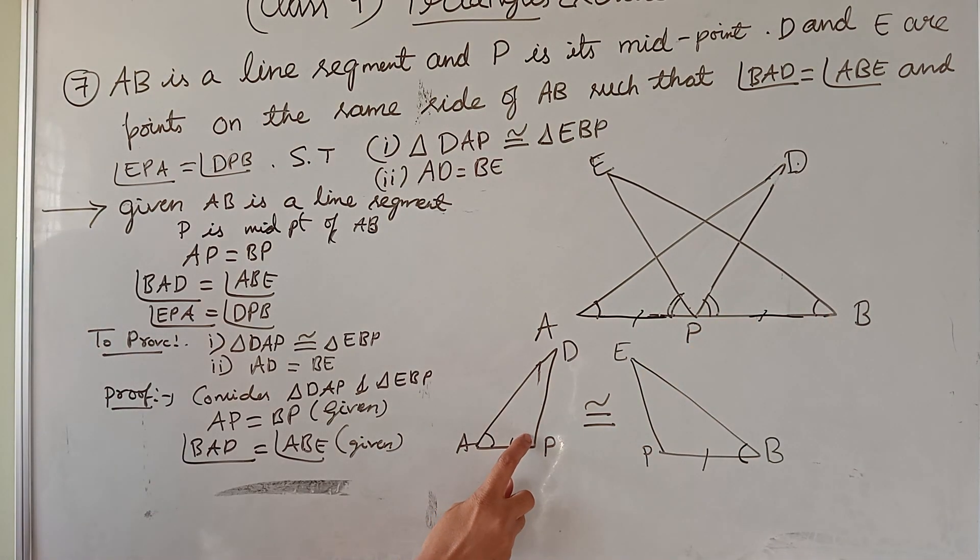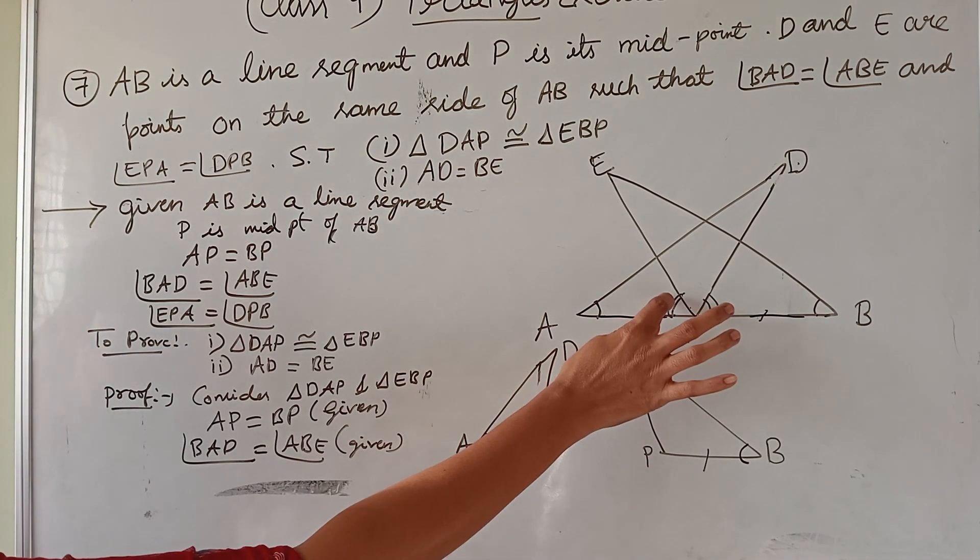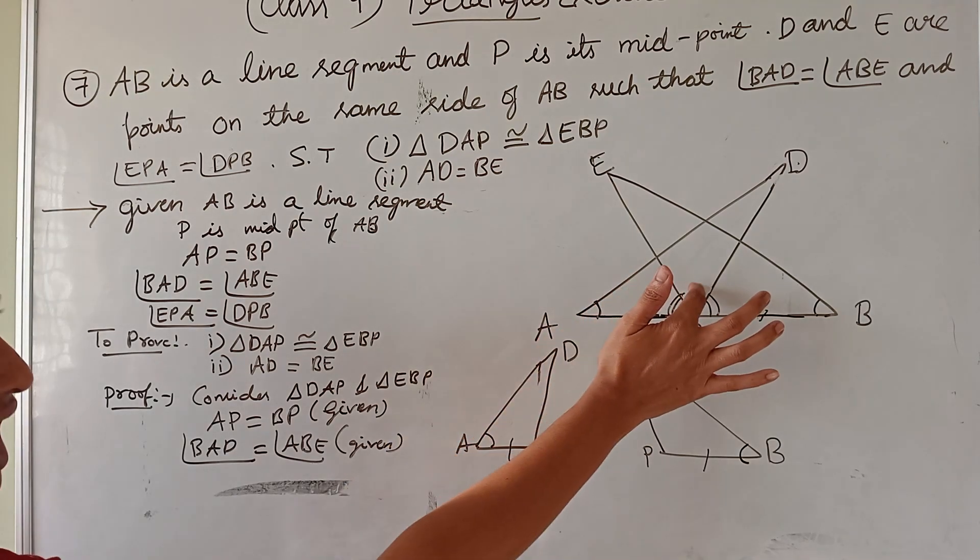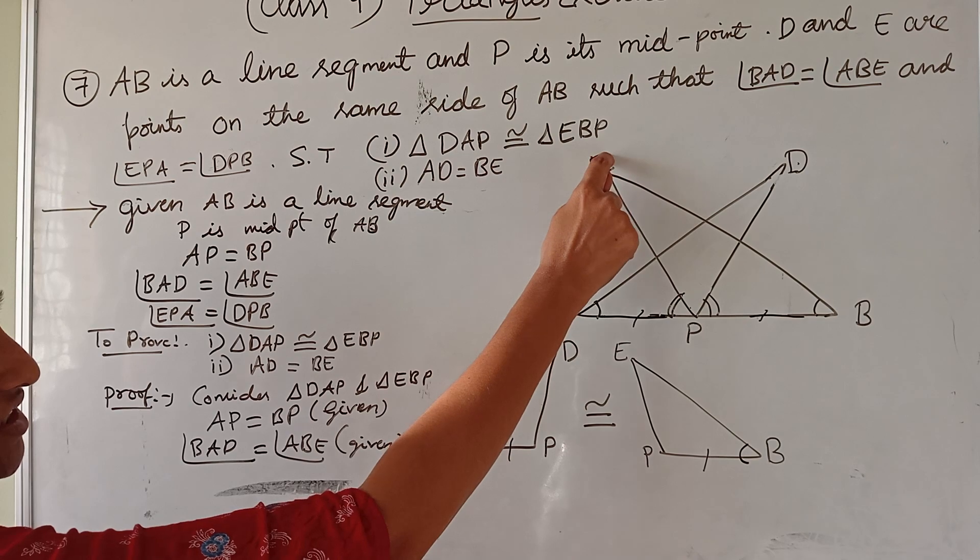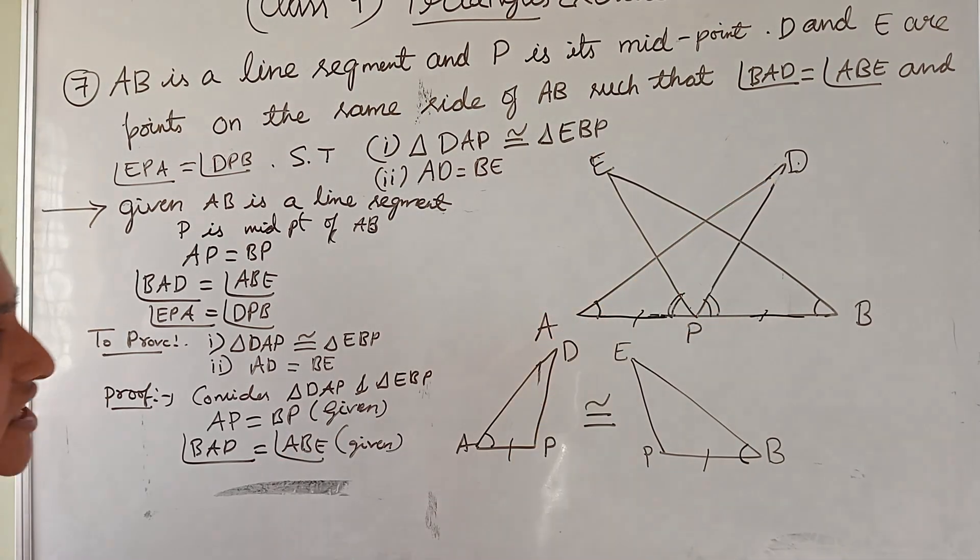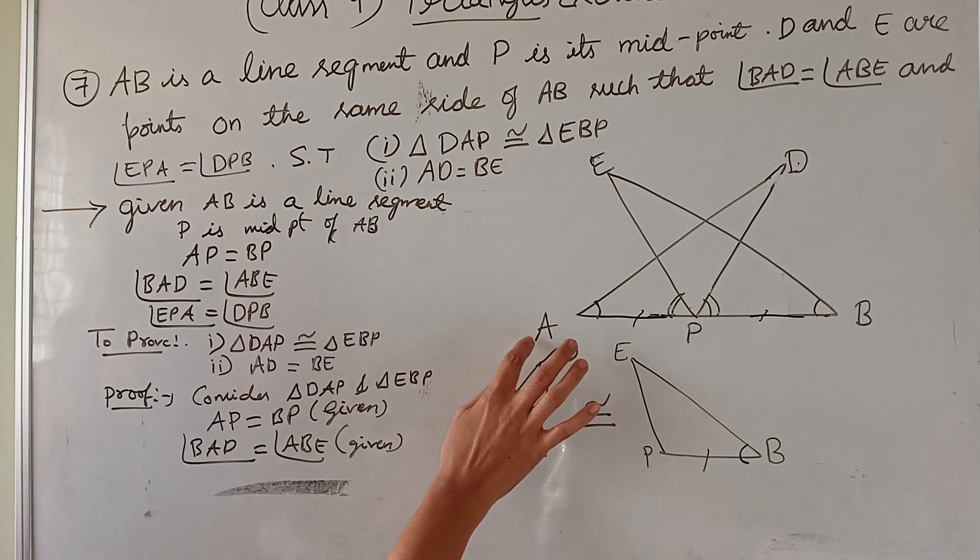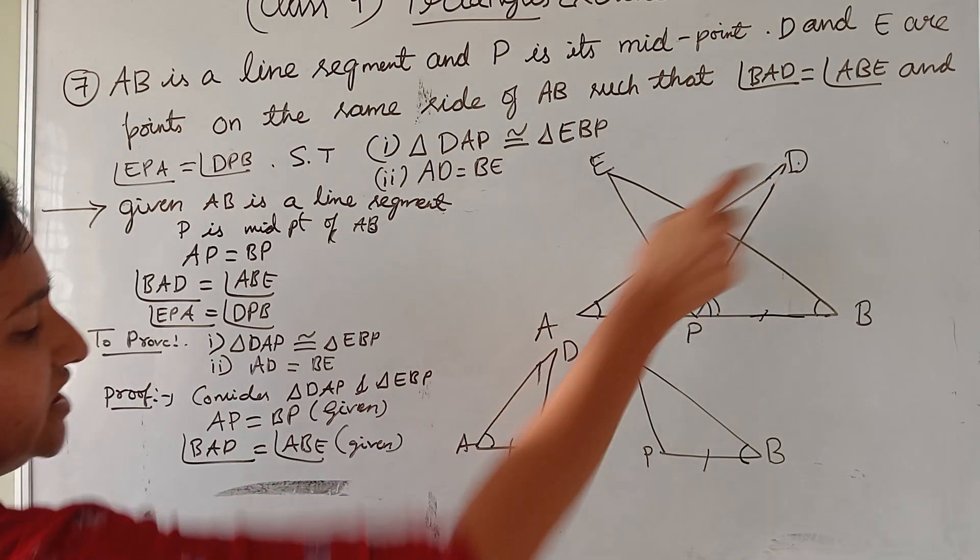I can't take here angle P equal to angle P because only half portion they are telling equal. This portion I need to add, that means EPD. I need to add EPD to EPA to get the whole APD.